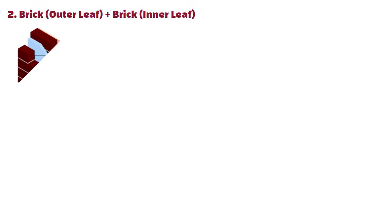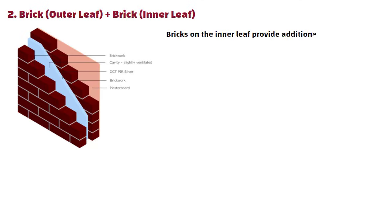Brick plus brick: Bricks on the inner leaf provide additional structural support and strength. This combination is less common than brick and block but is still used in certain projects.